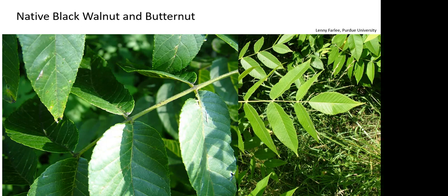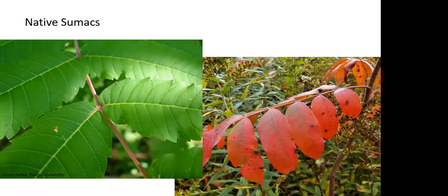We could also potentially confuse Tree of Heaven with our native sumacs, which also have pinnately compound leaves and small leaflets. However, the leaflets on our native sumacs either have serrations all along the margins — as is the case with smooth sumac on the left — or don't have any serrations at all and have entire leaf margins with no little glandular teeth, as is the case with winged or shining sumac on the right.